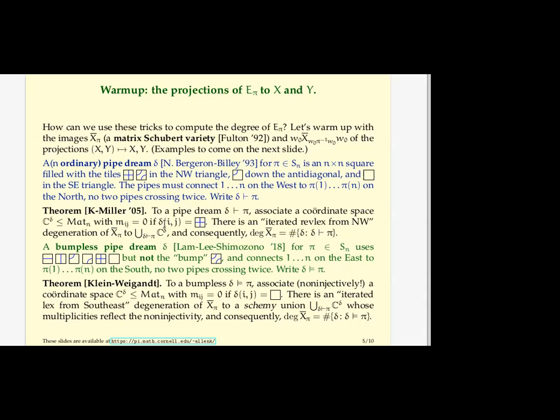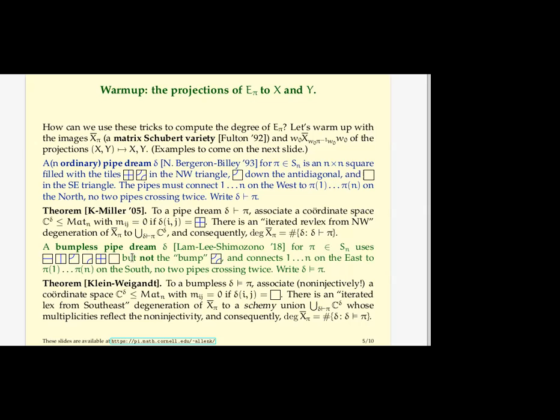Okay, so much more recently came the bumpless pipe dreams, which is another way to compute the degree or more generally the double Schubert polynomial. This uses a bunch more tiles, these guys here. There's one tile that's forbidden, the elbows tile that they call the bump. And so that one was fine for me in the pipe dreams, but it's forbidden in bumpless pipe dreams. There's a couple other changes.